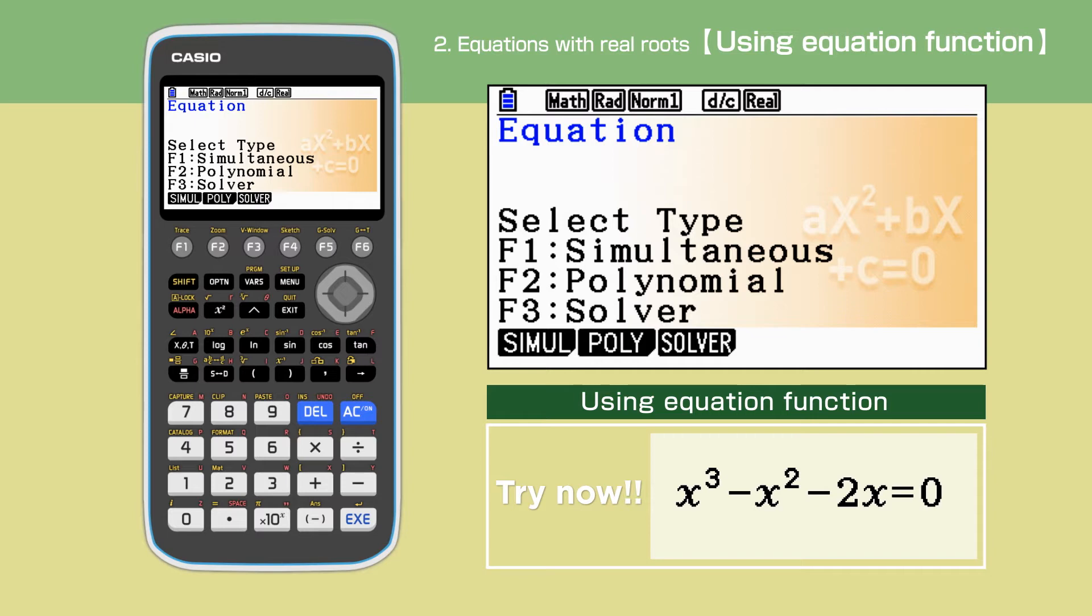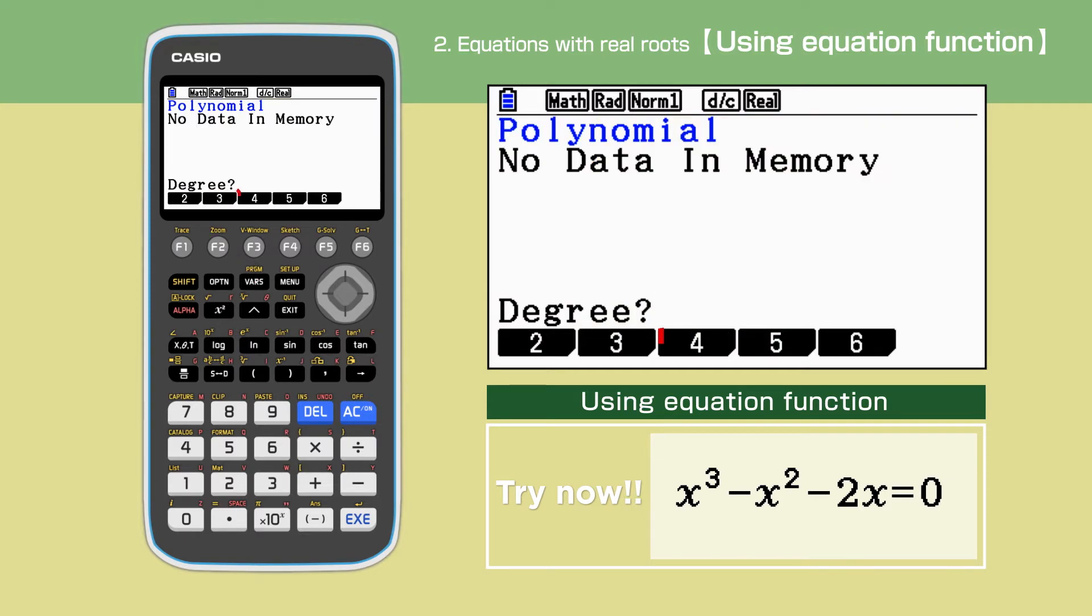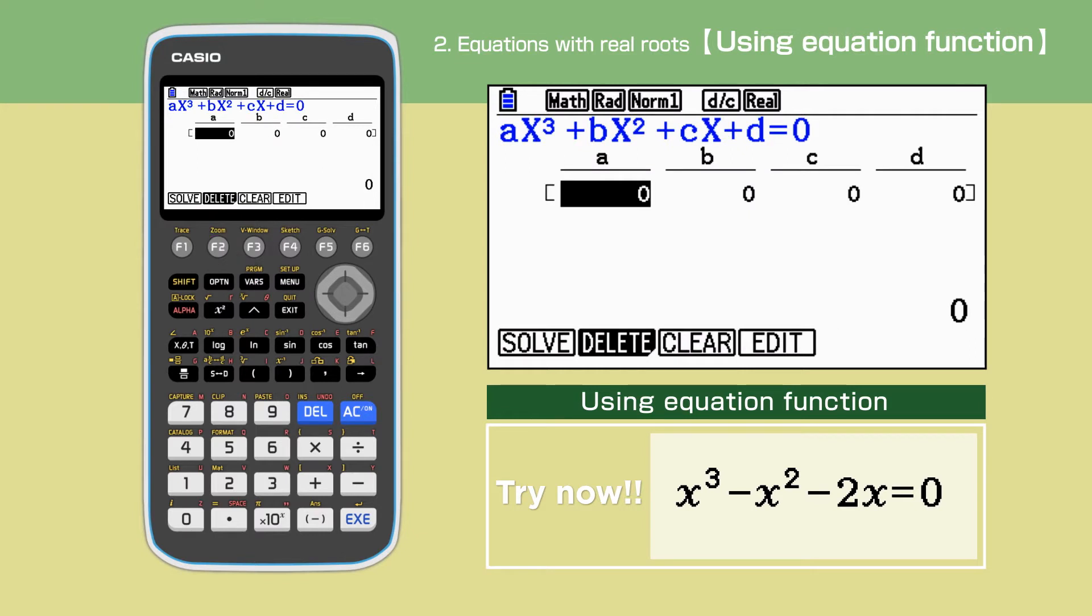The first method is using the equation function. Press F2 to select polynomial equation. The question is cubic, so press F2.